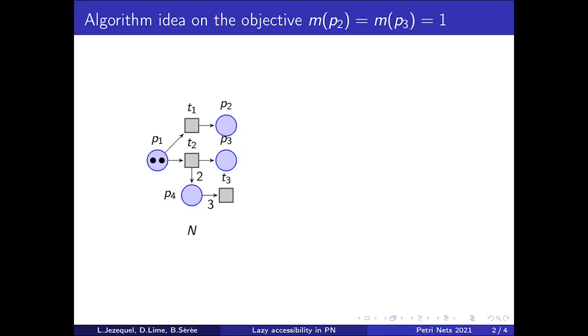As an example, let's consider the Petri Net N. One wants to know if the marking M1 is reachable. To do so, our algorithm will try to build a subnet of N which is as small as possible while allowing to show if M1 is reachable or not.